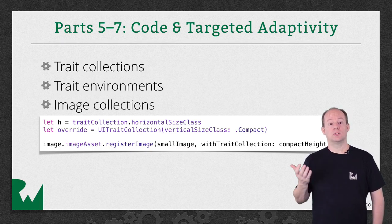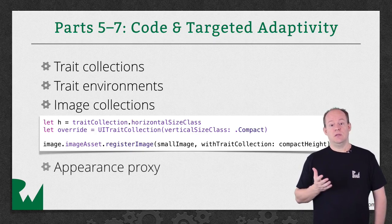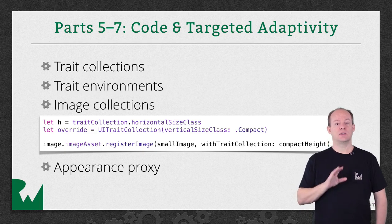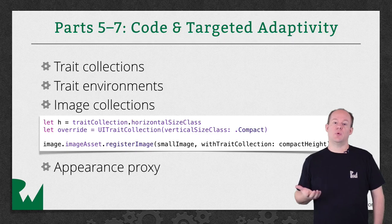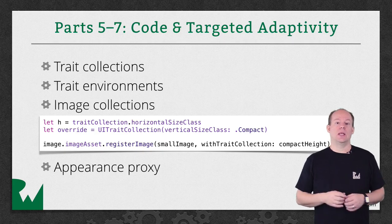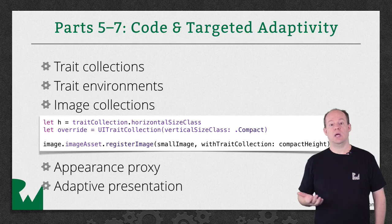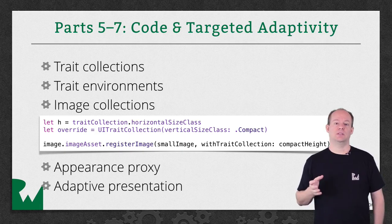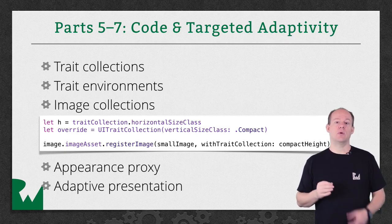Then we'll look at more targeted applications of Adaptive Layout. There's the Appearance Proxy, which you may have used before to do things like customize the look of the navigation bar across your entire app. Appearance Proxies now support Trait Collections, so you'll see how these two technologies work together. We'll also look at Adaptive Presentation, where you can control how each of your view controllers is presented at runtime. For example, in a compact size you'll want to show extra information in a full screen modal, but on a regular size device you might want to show that in a popover.